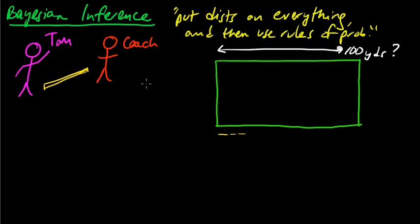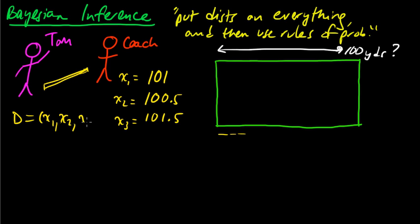And he very patiently does that. And he comes up with some measurements. So maybe he does that repeatedly, since he's very statistically minded. And he gets a first measurement of 101 yards. And then he gets, say, 100.5 and 101.5, something like that. So those are his three. So let's call those x1, x2, and x3. So this is his data, x1, x2, x3.